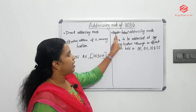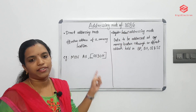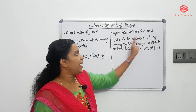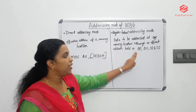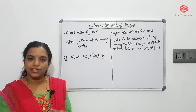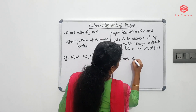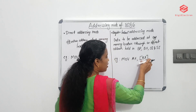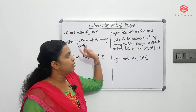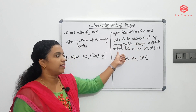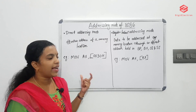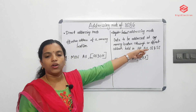The fourth one is register indirect addressing mode. In this mode, data is addressed at any memory location through an offset address held in BX, BP, SI, or DI registers. We can access that memory location using these registers.